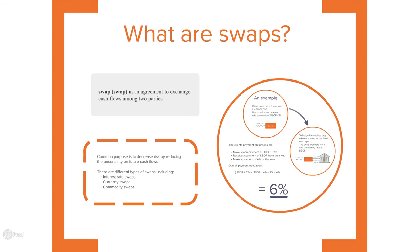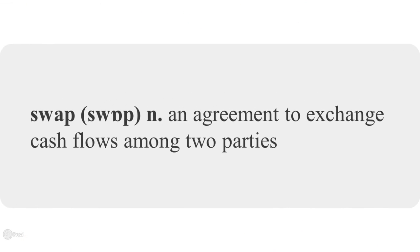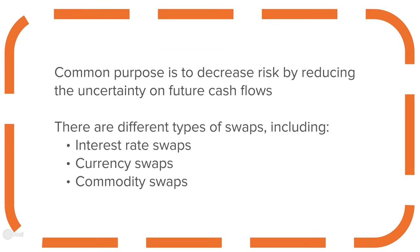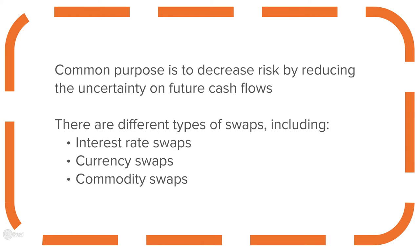A swap is an agreement between two parties to exchange cash flows. Each party makes payments to the other party where the payments are calculated using a different formula or benchmark rate. Bank clients usually enter into swap agreements to reduce or eliminate uncertainty of future cash flows or payments. Such uncertainty can arise from movements in interest rates or fluctuations in foreign exchange rates. In this presentation we focus on interest rate swaps; however, there are other types of swaps which could have been affected, such as currency swaps and commodity swaps.